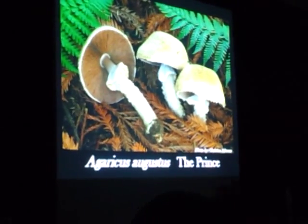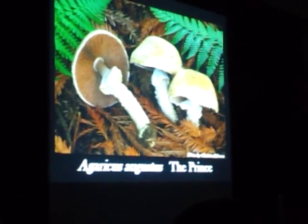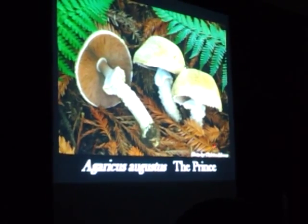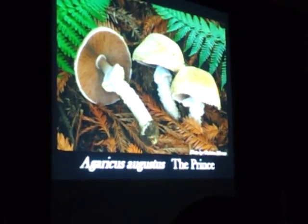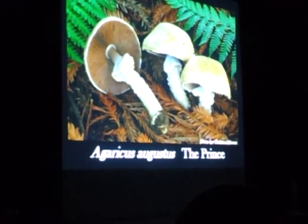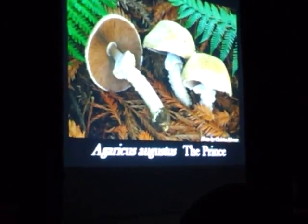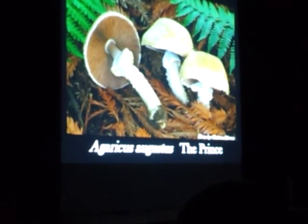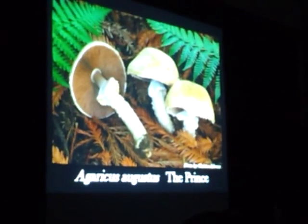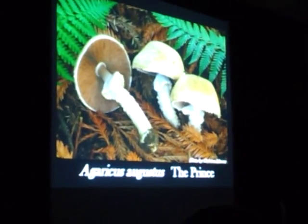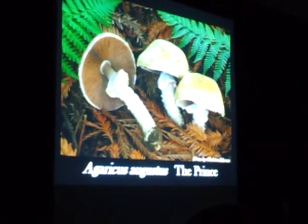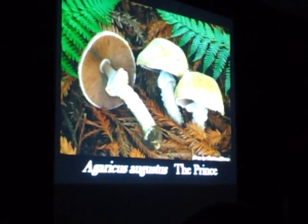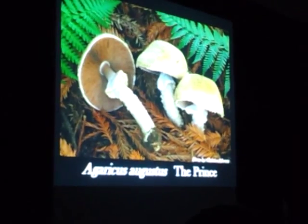Agaricus augustus, the prince. This one is not very common in the mountains, but really common on the coast, especially in the summer with fog drip. It doesn't need very much moisture to fruit. It has brownish scales on the cap, a shaggy stalk, a big skirt-like veil, and a sweet almond odor — a very good edible.